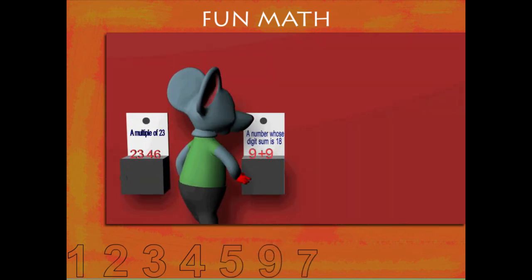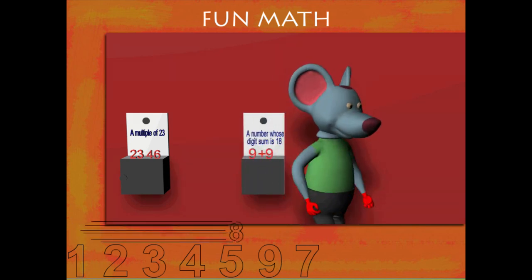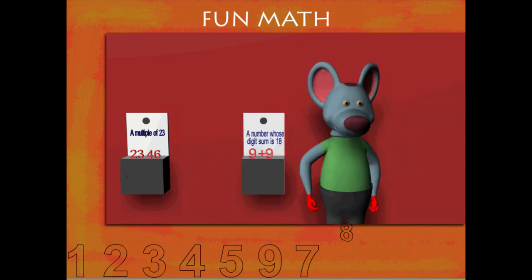The last box has the number 99 and its digit sum is 9 plus 9, which is equal to 18. That was fun, Toby.